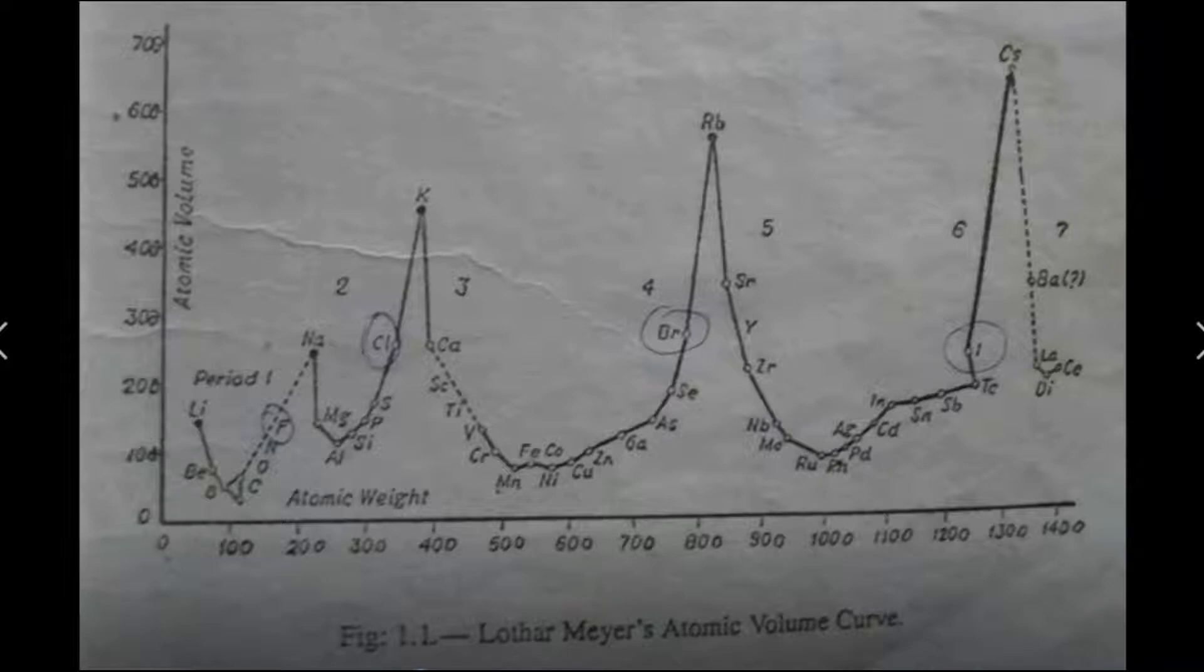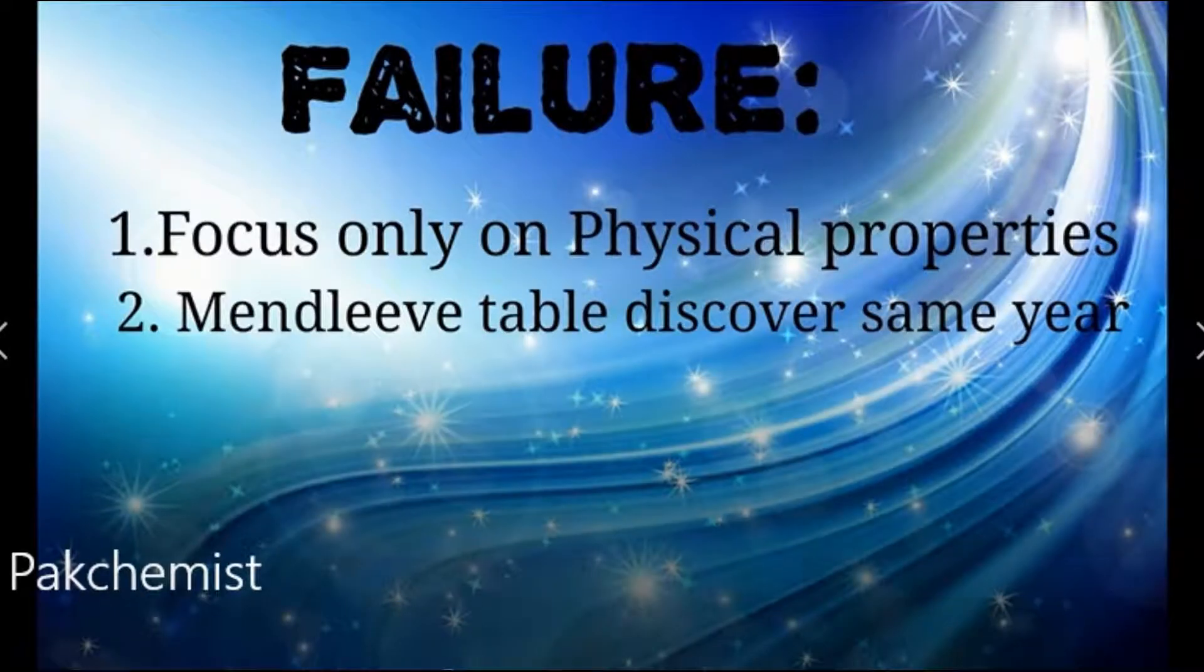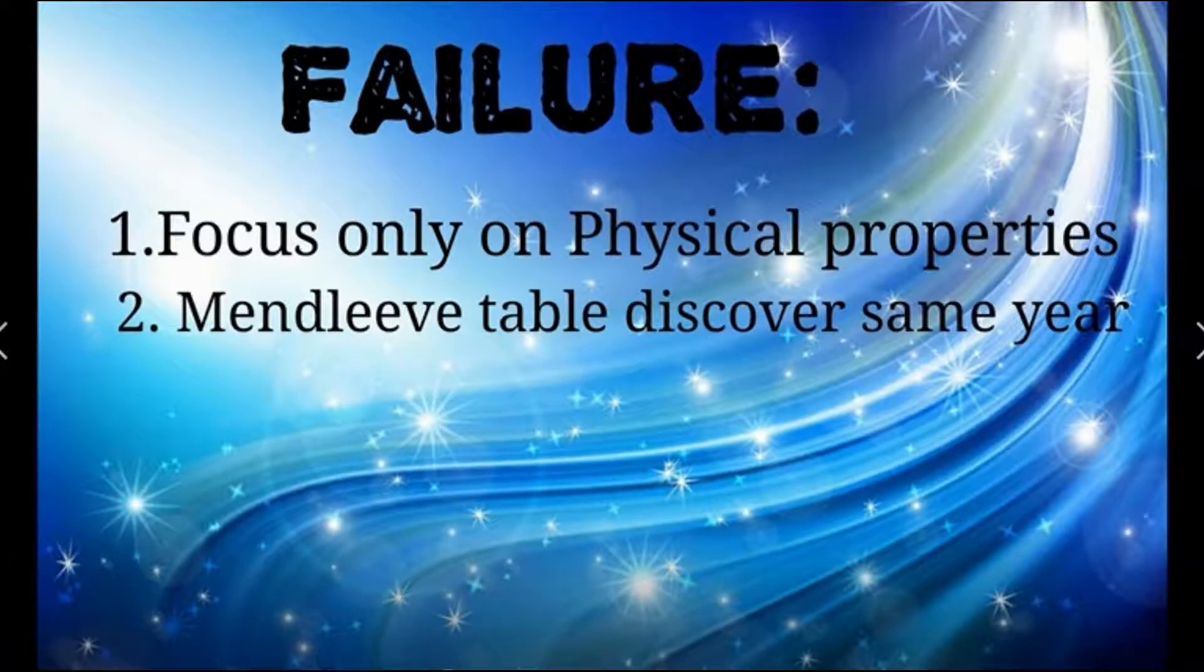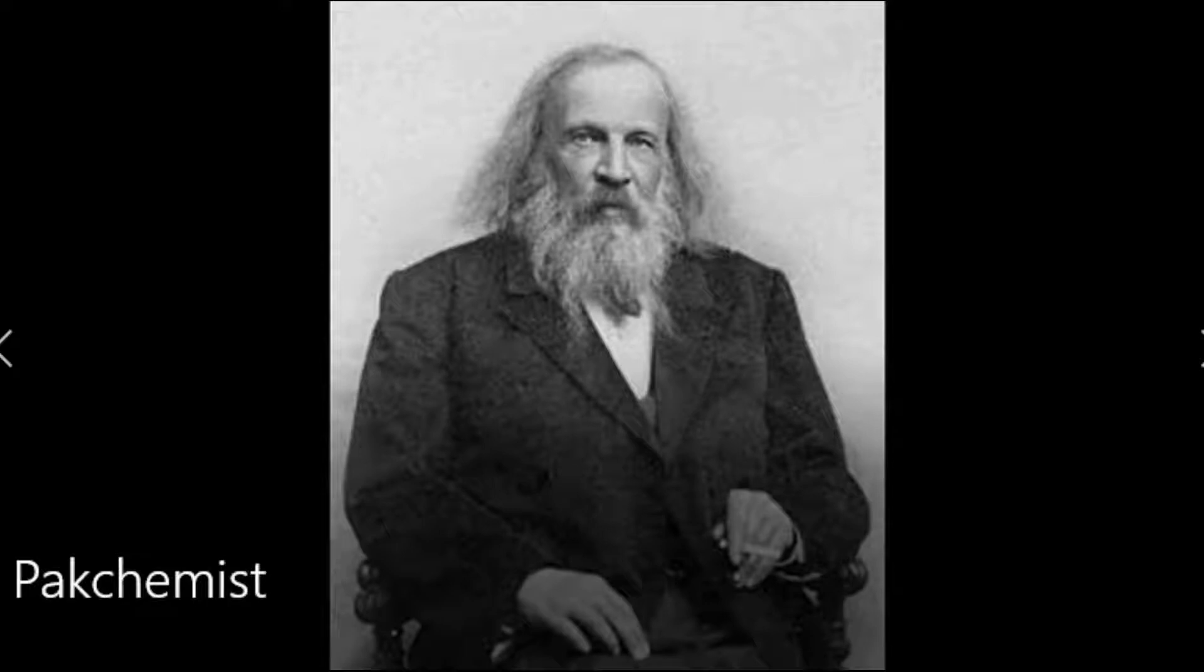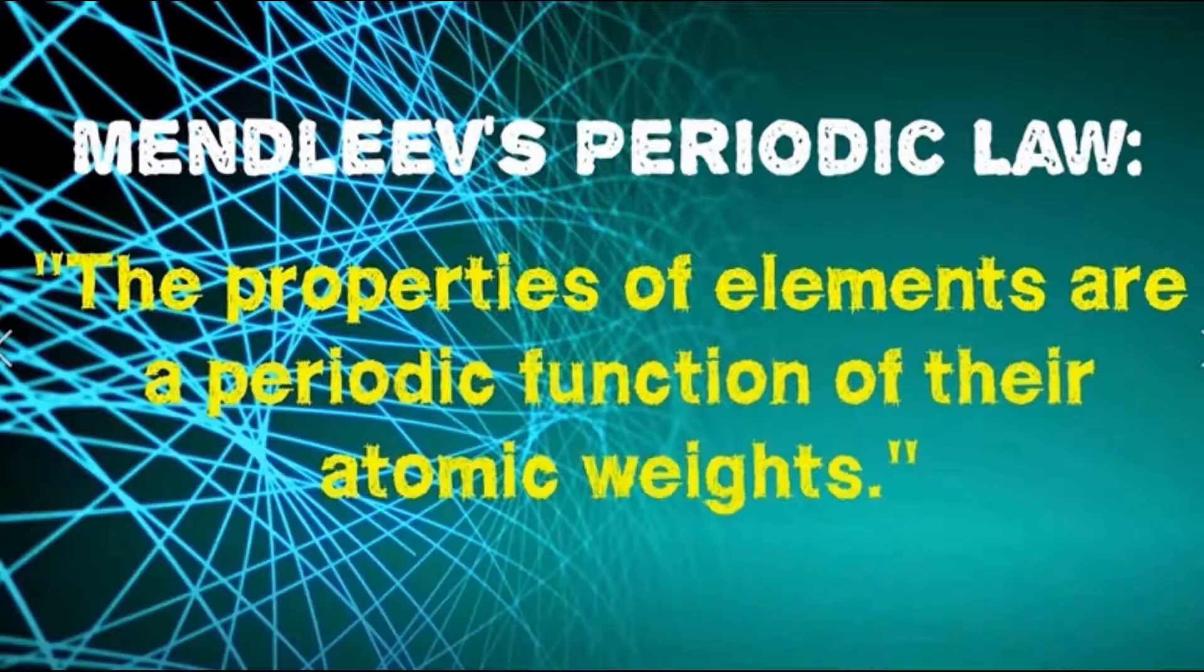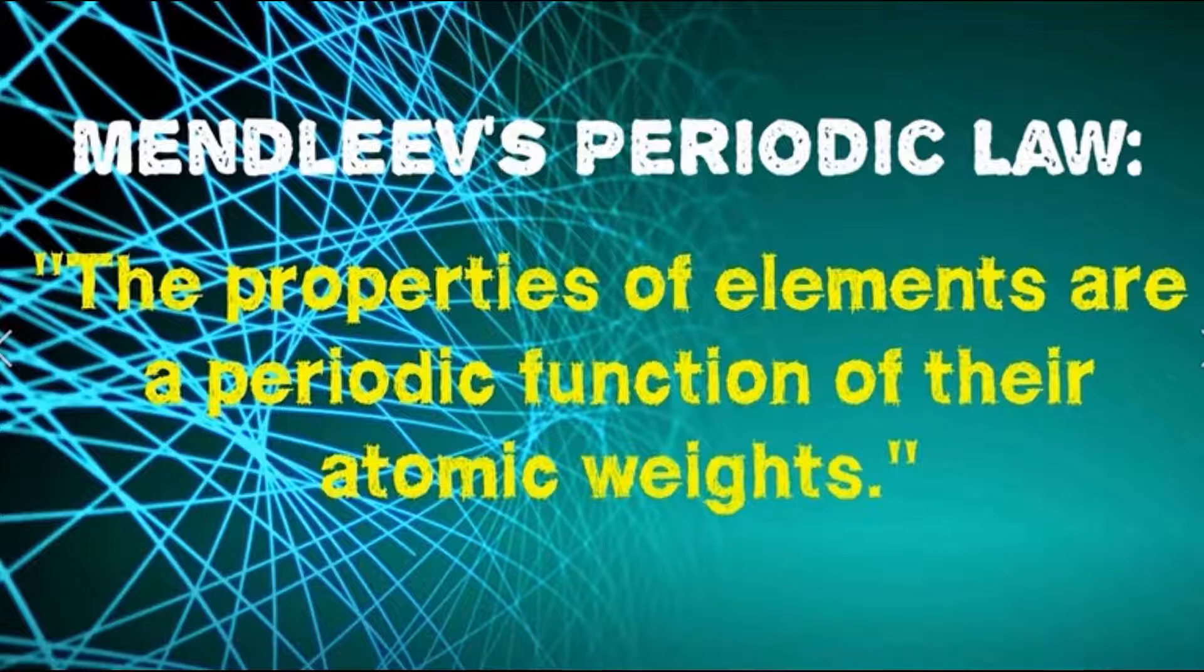But again Lothar Mayer failed because Mendeleev's periodic table was discovered the same year, and in comparison to Mendeleev, Mayer's table was incomplete and their classification of physical properties was not based on any logical basis. He is Mr. Mendeleev. Mendeleev arranged 63 elements in order. He said the properties of elements are a periodic function of their atomic weight, and the vertical columns are groups and horizontal rows are periods.